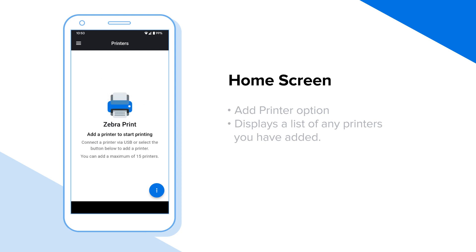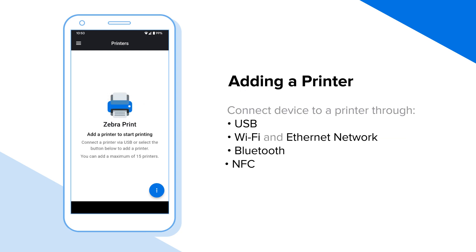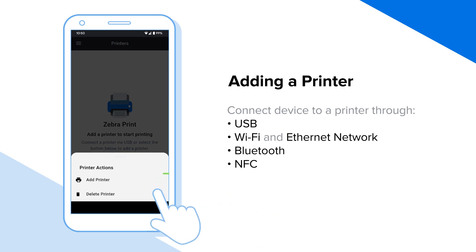To add a printer, simply connect the printer via USB, or tap the three-dot menu button and then tap Add Printer.